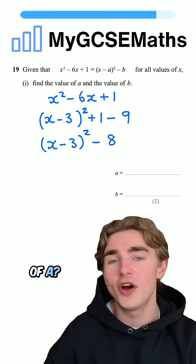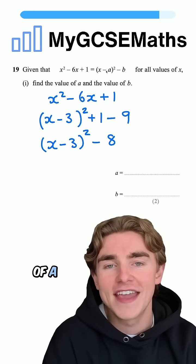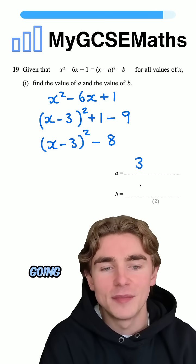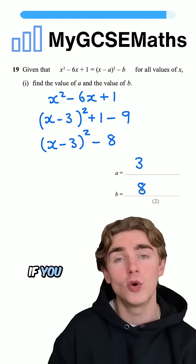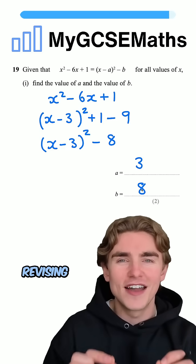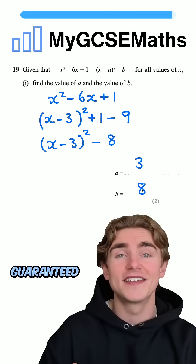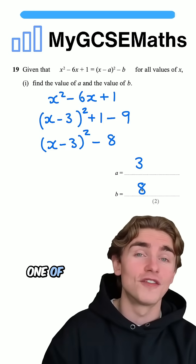So, what's the value of A? What's the value of B? Well, the value of A is going to be this 3 here, and the value of B is going to be that 8 on the end. If you weren't sure how to do that, consider revising completing the square, pretty much guaranteed to come up in at least one of the papers.